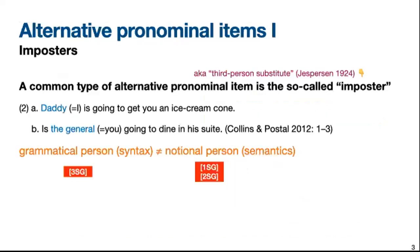One type of alternative pronominal item is what Collins and Postal call the imposter, which is also known as the third-person substitute in yes-person terms. An imposter looks like an ordinary R-expression or referring expression and is also subject to third-person agreement, but it semantically refers to the speaker or the addressee instead of a third person. For example, in 2A, 'daddy is going to get you an ice cream cone' — here daddy actually means I, that is the speaker. And in 2B, 'is the general going to dine in his suit?' — the general actually means you, which is the addressee.